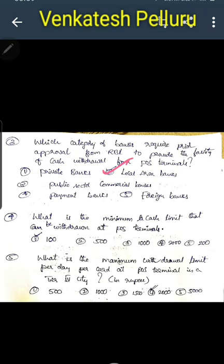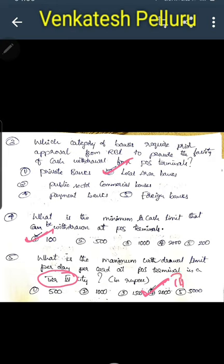All other banks need not get prior approval from RBI to provide this facility. What is the minimum cash limit that can be drawn at POS terminals? The minimum is Rs. 100 per transaction. What is the maximum withdrawal limit per card per day at a POS terminal in a Tier 4 city? Since Tier 3 to Tier 6 cities have the same maximum limit, the answer is Rs. 2,000 per card per day.